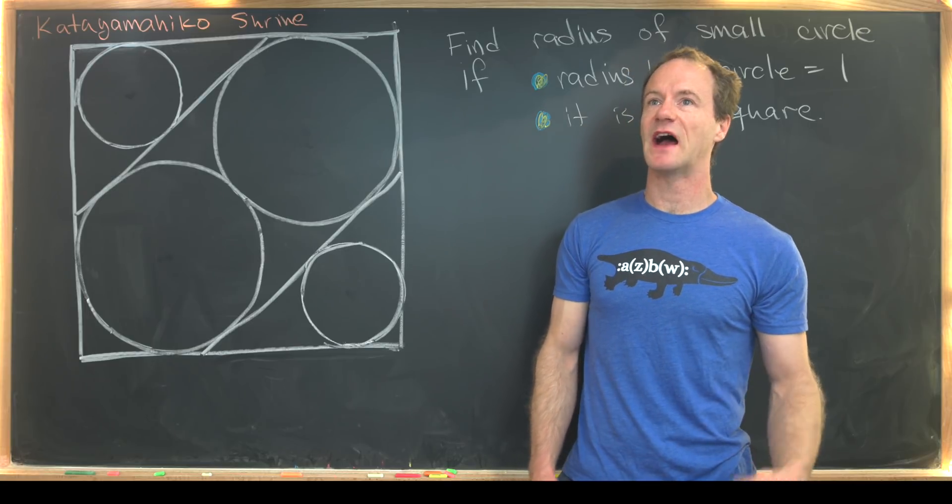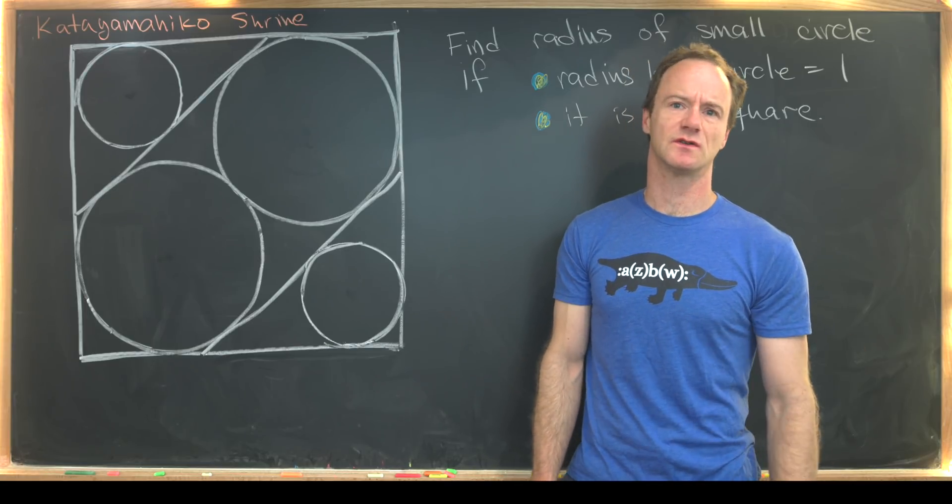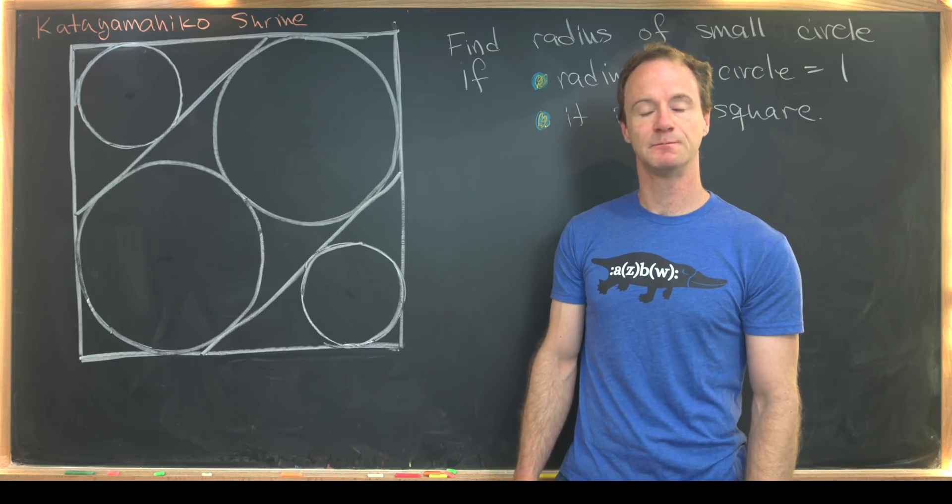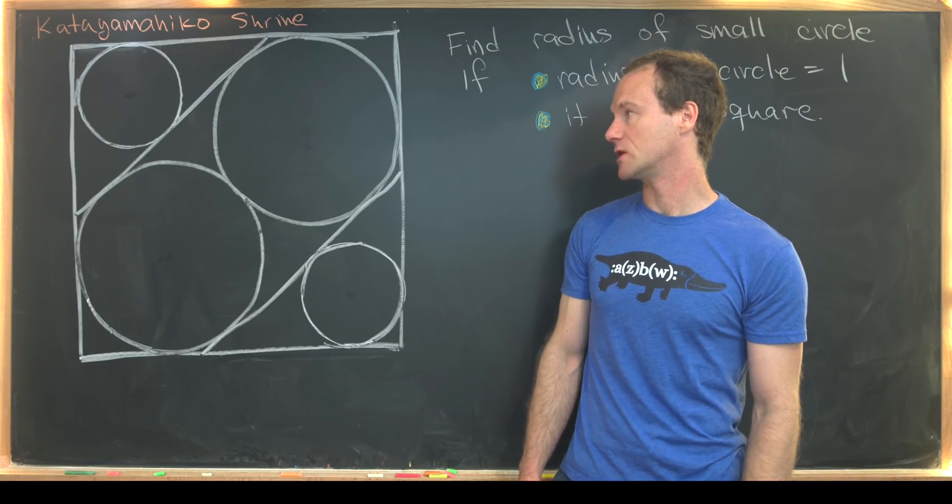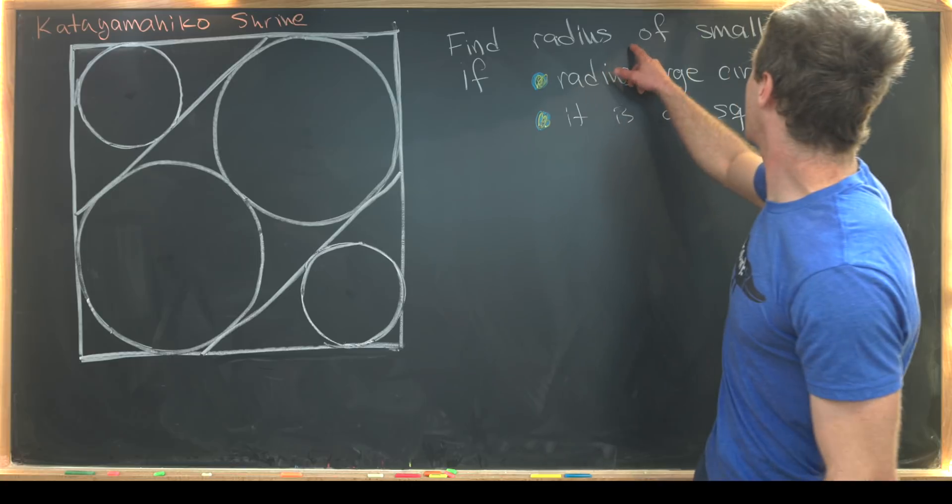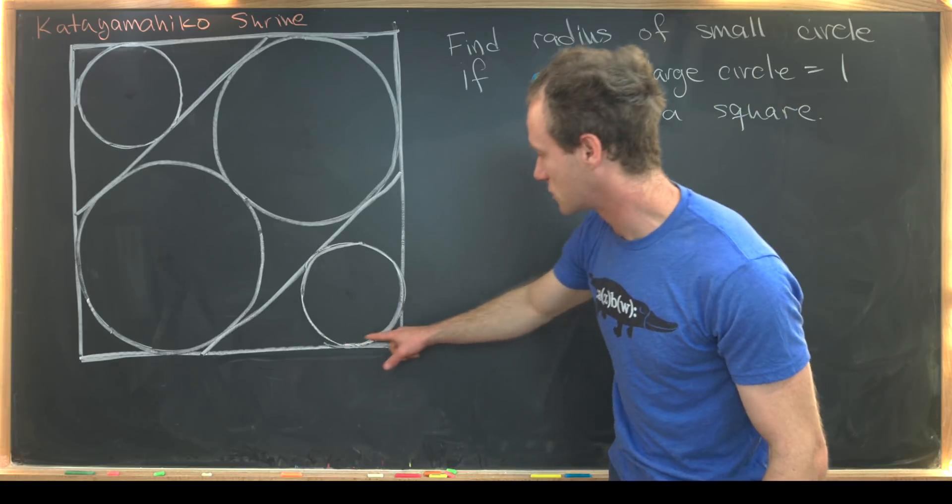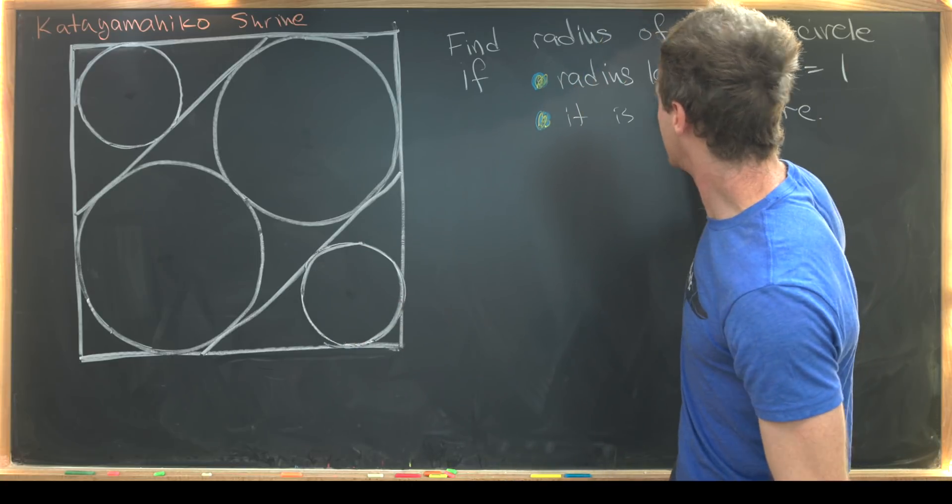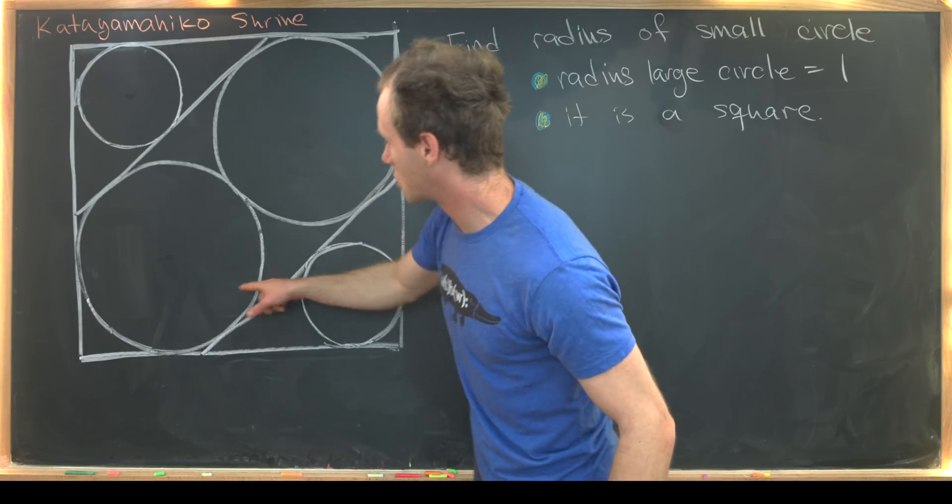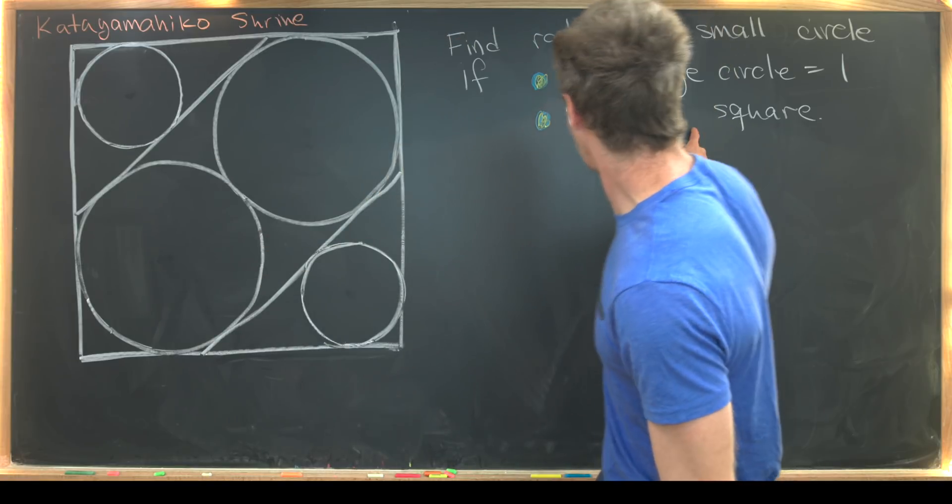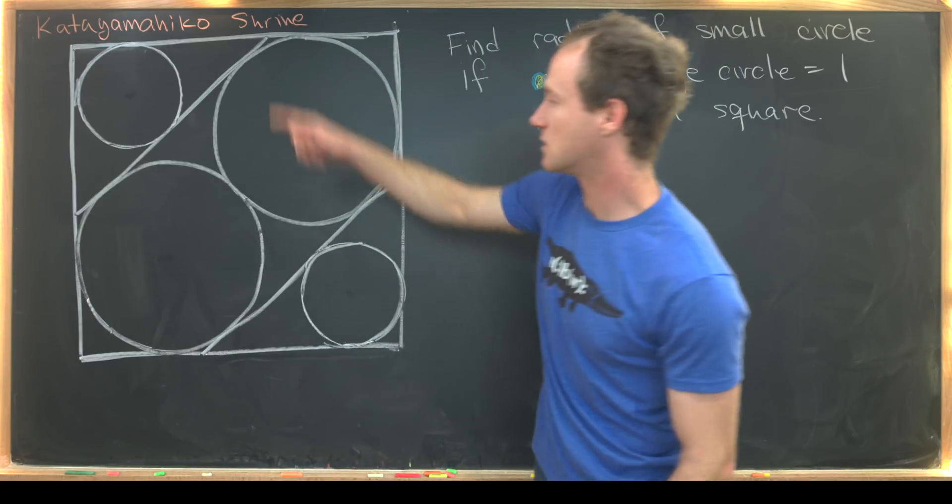I think that's a cool fact about the cultural and historical significance of problems like this. Okay, so let's see what our goal is. We want to find the radius of the small circle here if the radius of each of these large circles is 1 and this rectangle is a square.